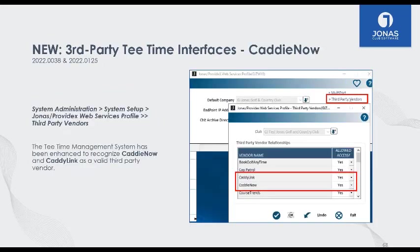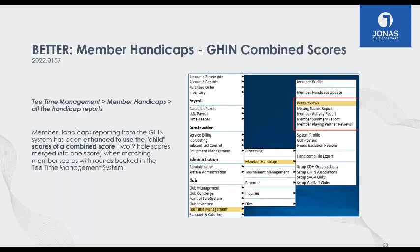Also in the Tee Time module, we have a new interface to a company called Caddy Now or Caddy Link. If you have a caddy program at your club, definitely check those out — they integrate directly into your Jonas system. The other Tee Time feature has to do with the GIN handicap system. Specifically for the missing scores report — if somebody logged a round in Jonas but didn't enter their score online, that's considered a missing score.